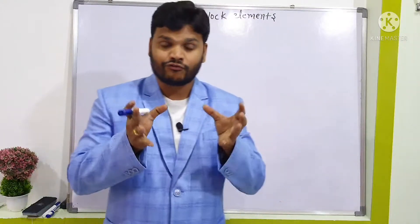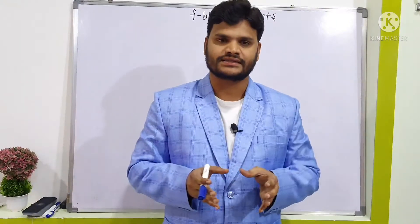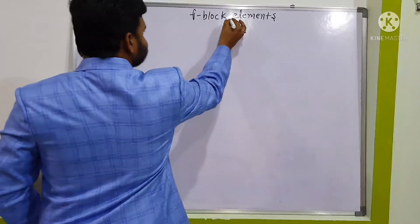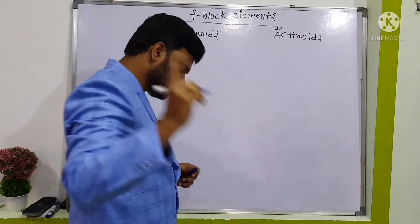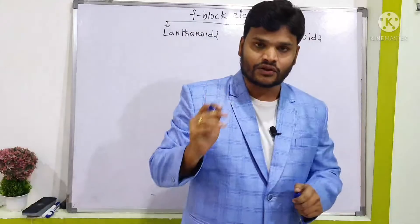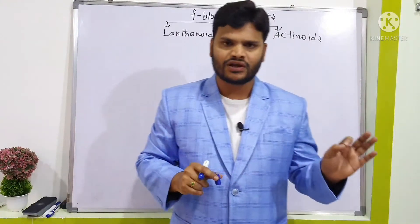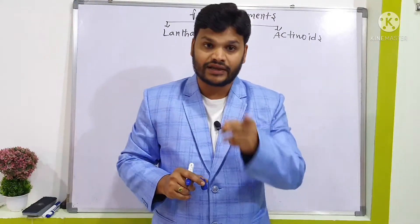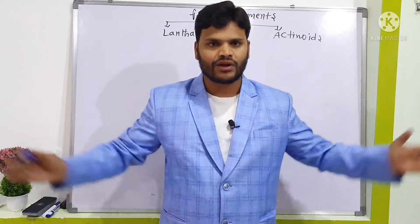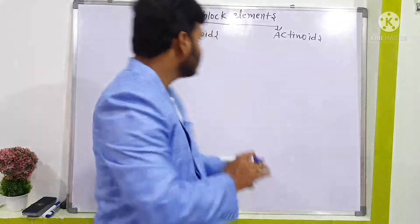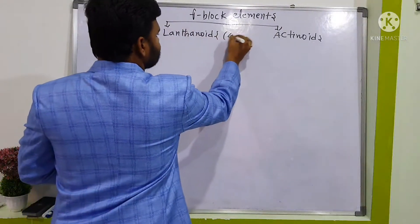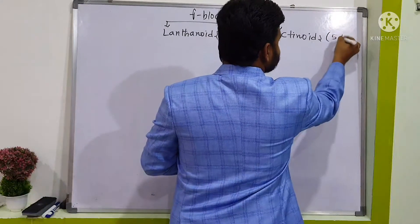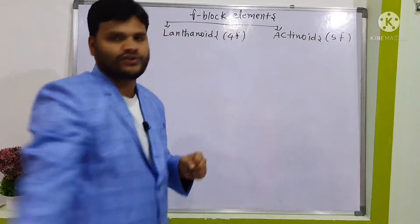F block elements are also called inner transition elements, whereas D block elements are called transition elements. F block contains two series: number one, 4F series — that is lanthanoids; and number two, 5F series — that is actinoids.